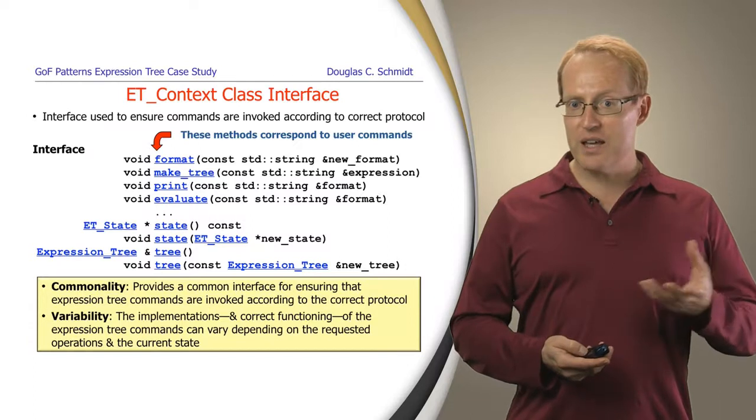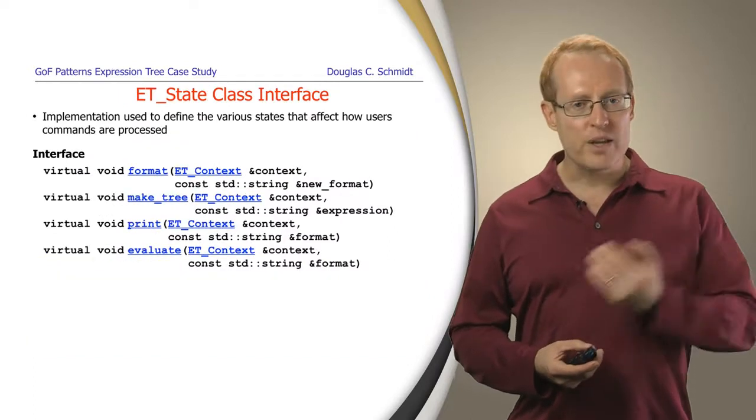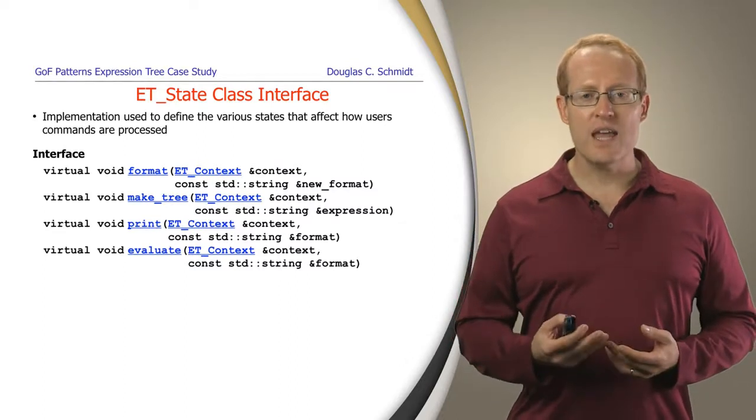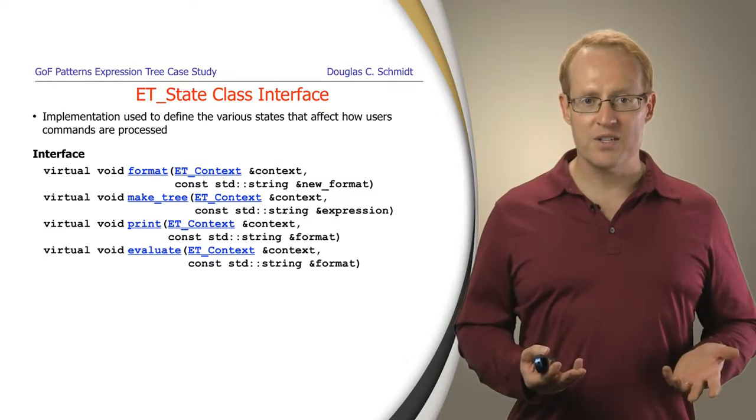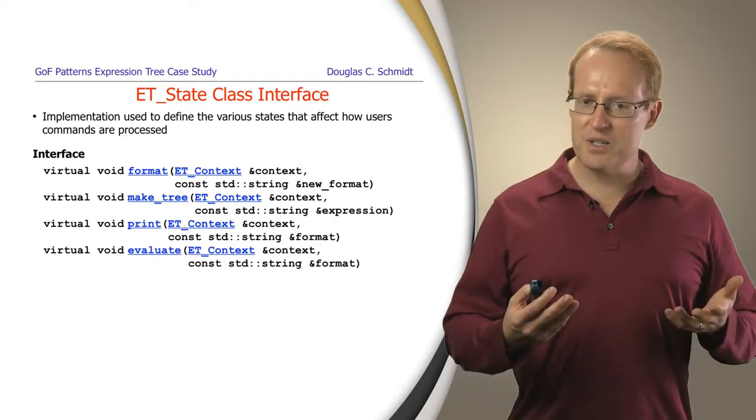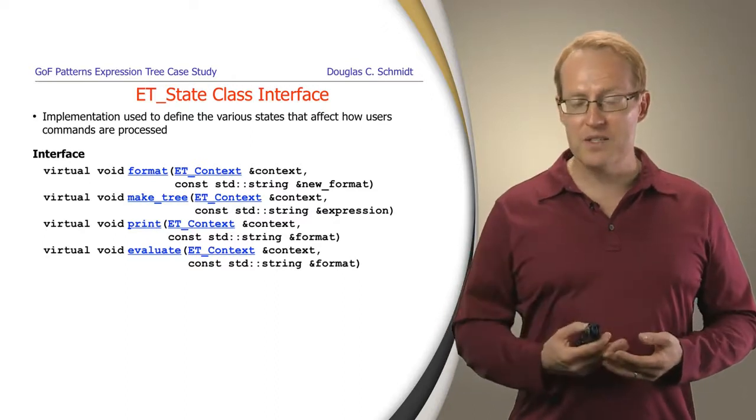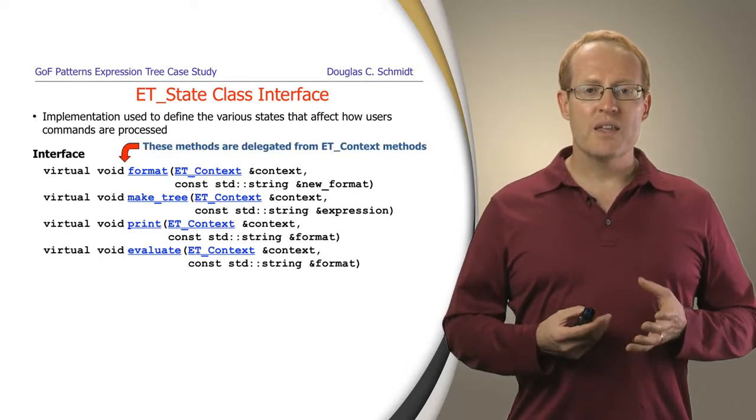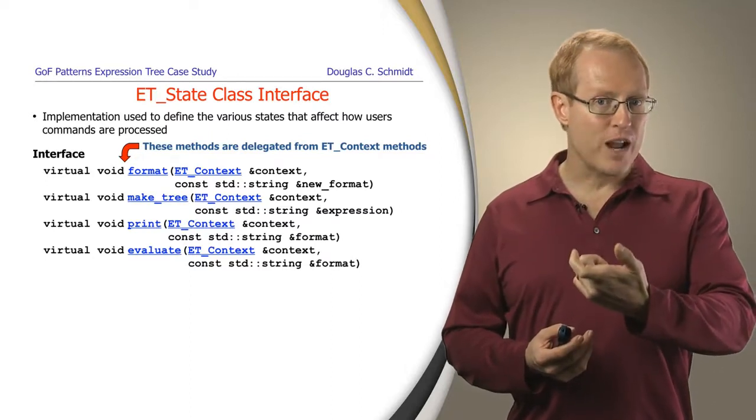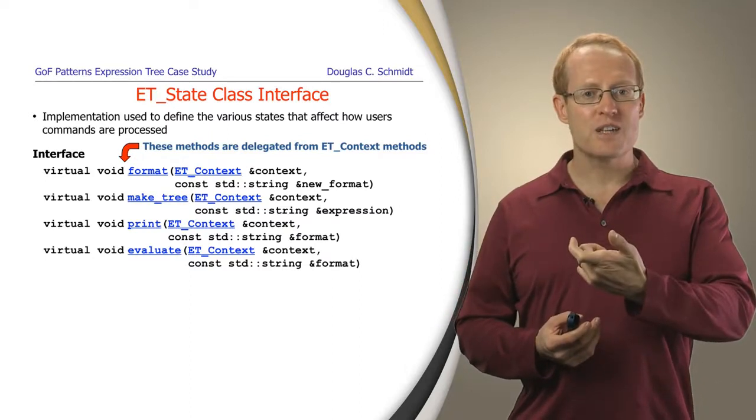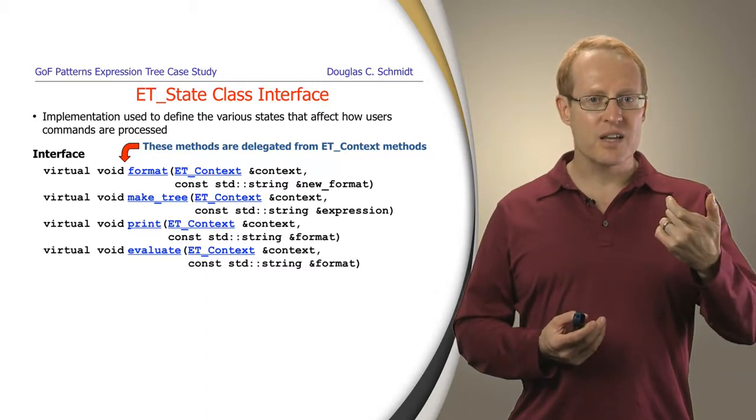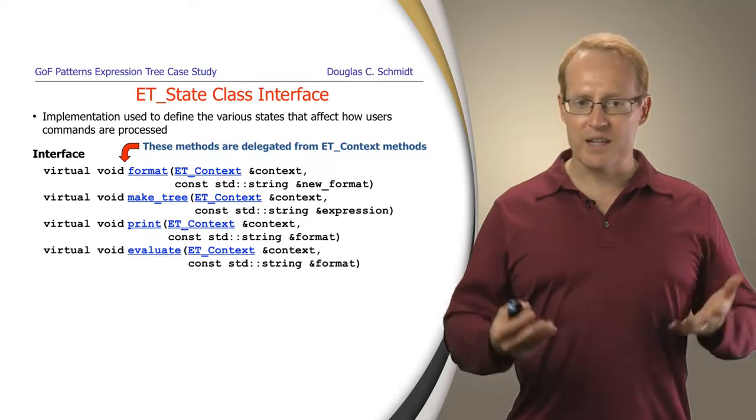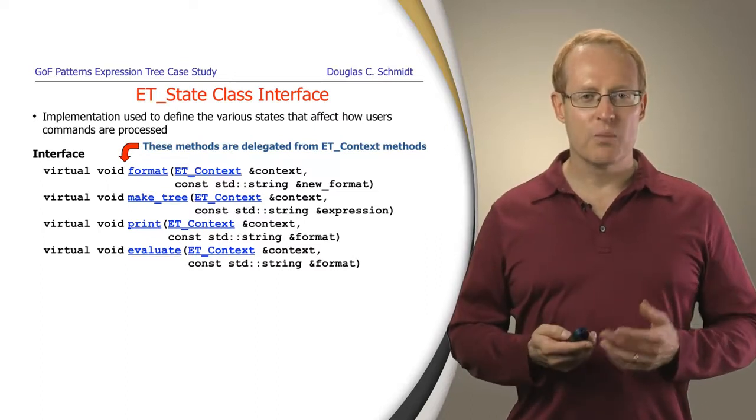Now, ET context is essentially a bridge that ends up pointing to the ET state hierarchy. So, ET state is a class that defines the implementations of the various states. And as we'll see here, we'll have an ET state class with many of the same methods that we saw before, except they're all going to be virtual. And in addition to being virtual, they're also going to take a first parameter to every method, which is a reference to the context in which that particular state method was called. And this is something that's called delegation.